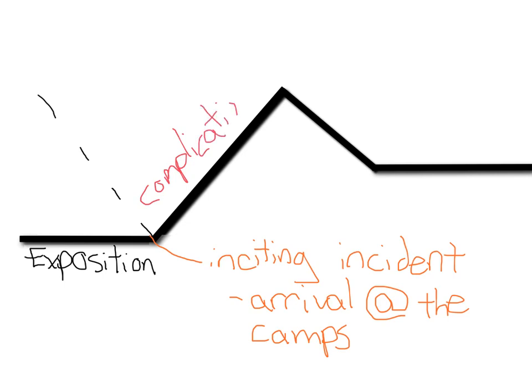The complication in this text was fairly long. It included events like the pipels being tortured, stuff about the bomb that fell. It could even be basic things that happened early in the complication, like Elie meeting Mengele, or later on when he meets Yossi and Tibi. All that is complication.